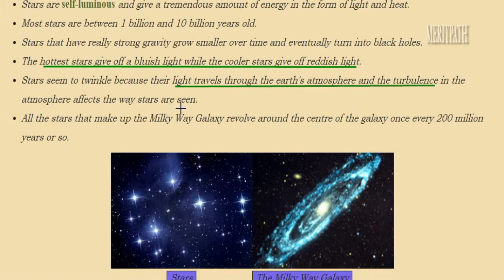If you are traveling in a flight, sometimes turbulence happens when the flight doesn't travel in a straight line — it tilts to the right or left because of air pressure changes. Earth's atmosphere is covered with a thin blanket of air, and light travels through this air. Because of these changes or turbulence in the atmosphere, it affects the way the stars are seen by us.